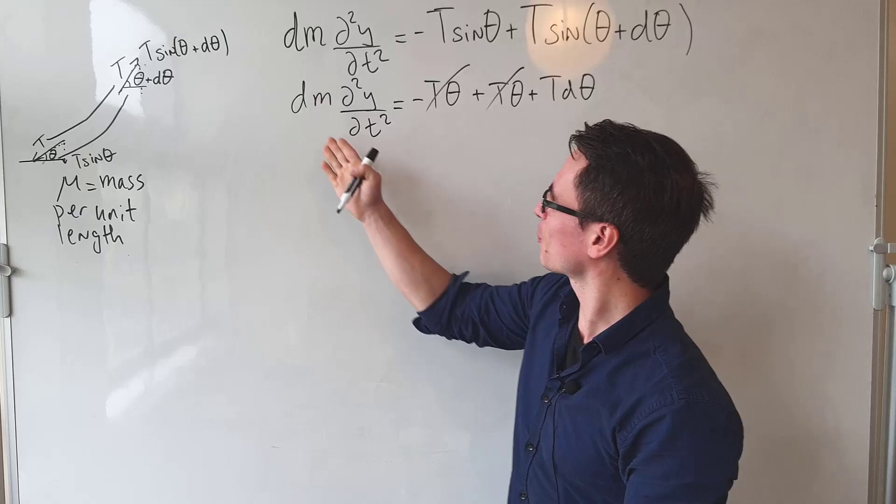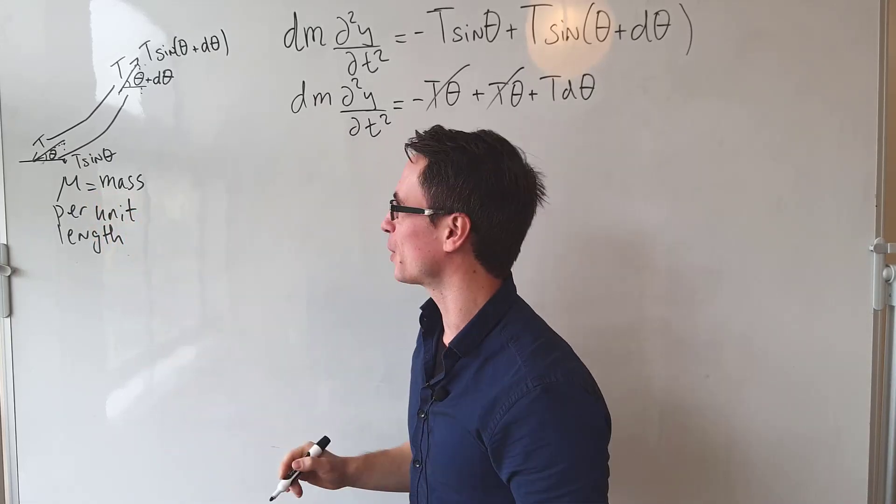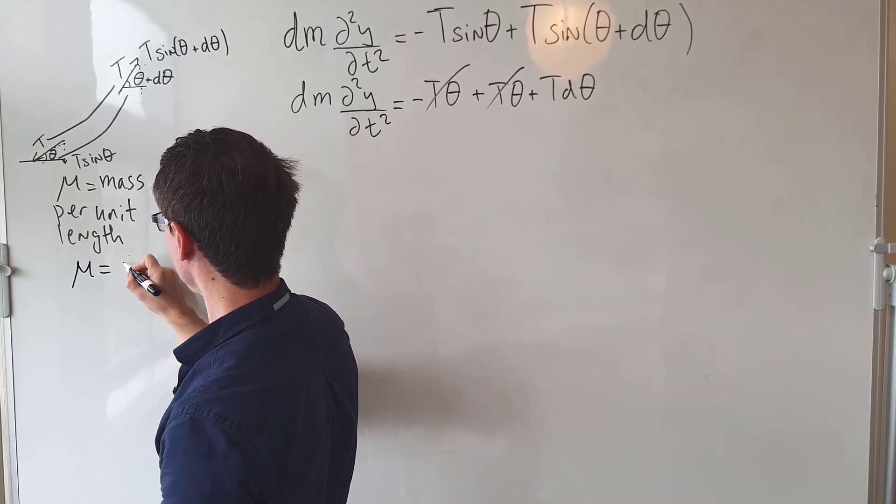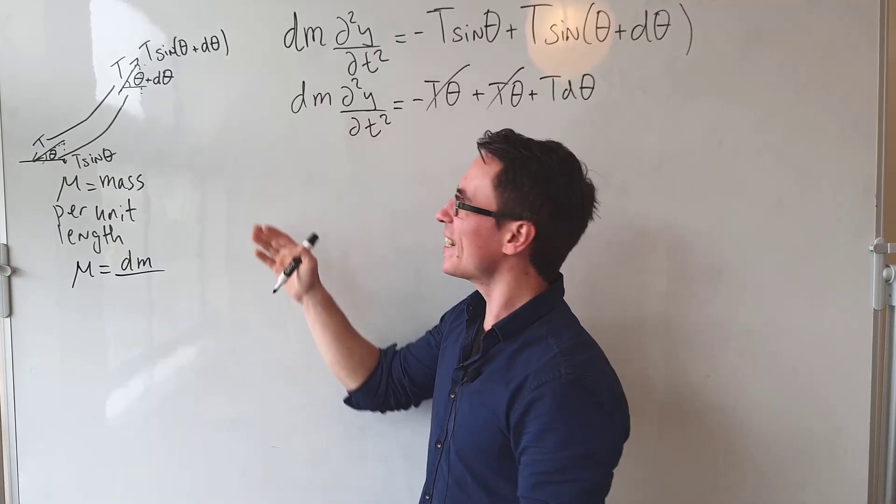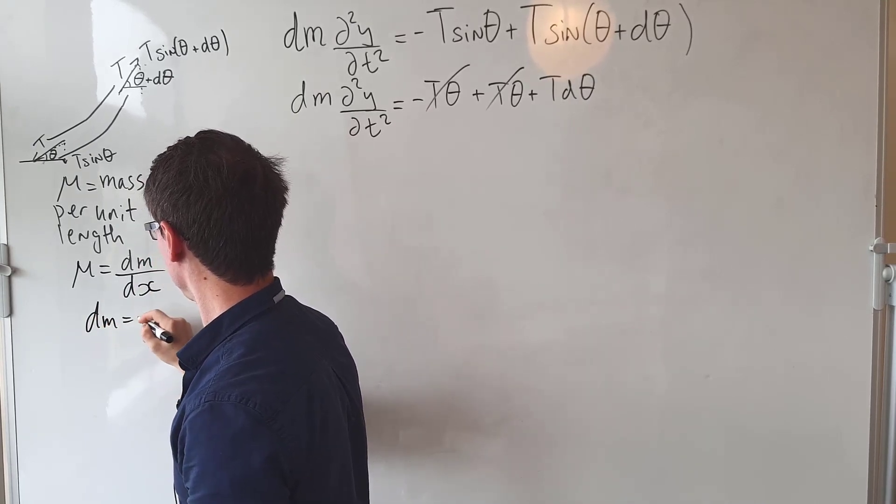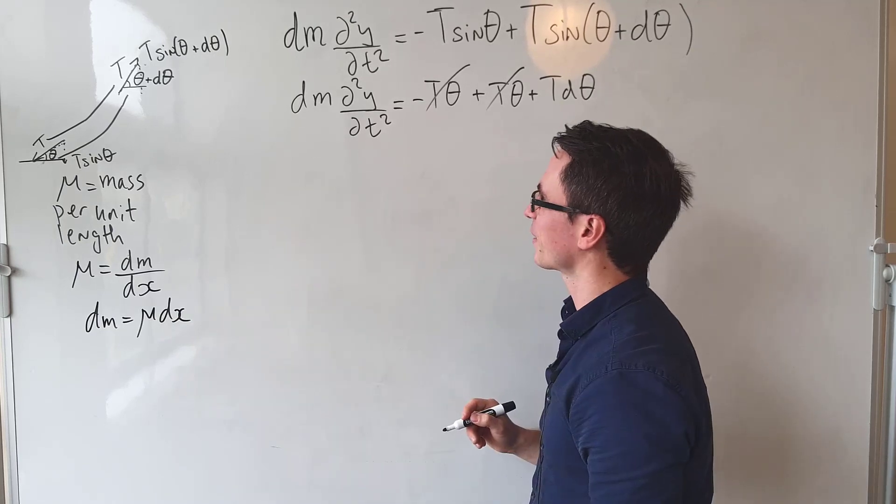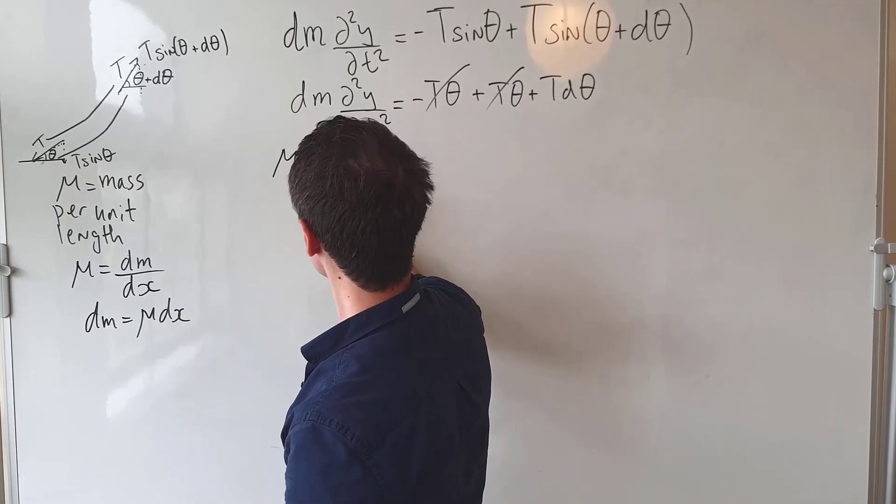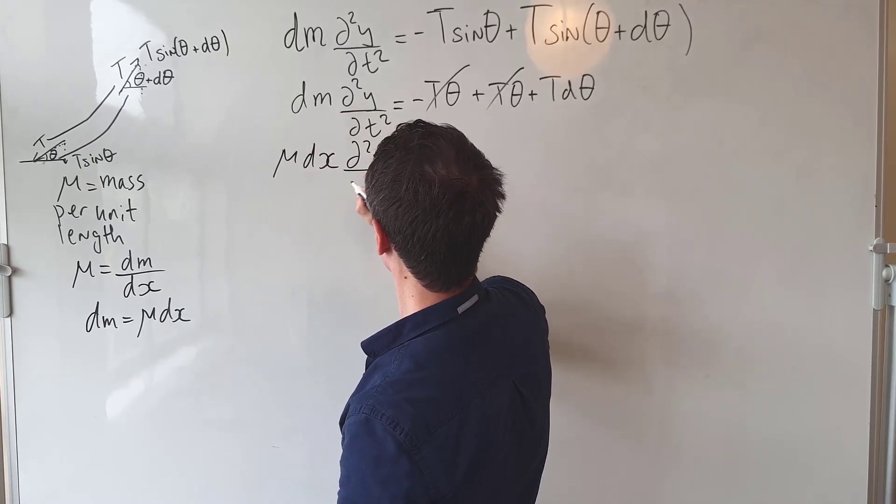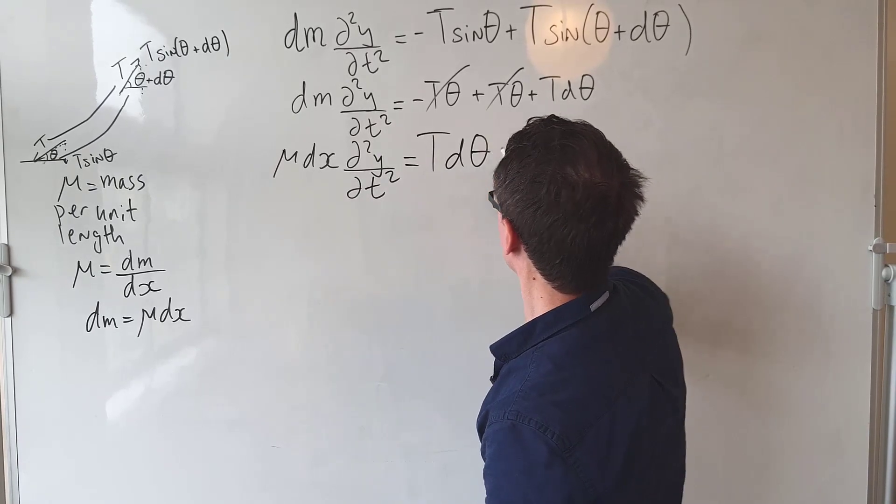Now what I'm going to do is express this little mass dm in terms of the mass per unit length. If mu equals the mass per unit length, then we can say that mu equals dm divided by the length of this segment, which we just call dx, meaning that dm equals mu times dx. So what we get is that mu dx times d²y/dt² equals T d theta.